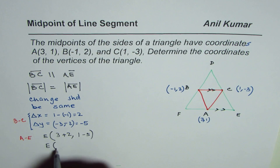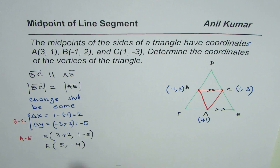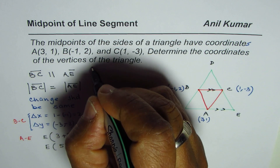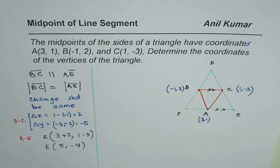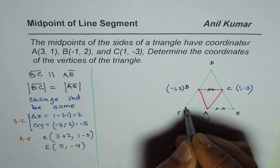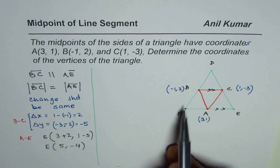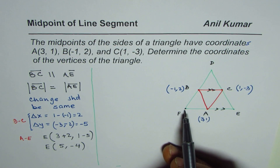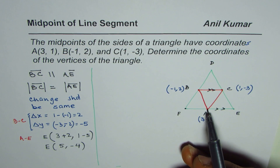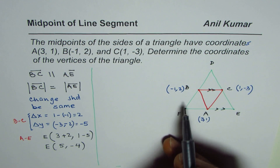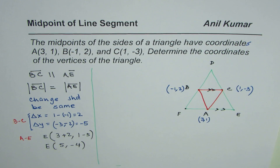That gives us E as (5, -4). That is how you find the coordinates of point E. Now we'll follow the same process to find the coordinates for point F. You can also find point F using the midpoint formula directly, but we'll verify using the same property.